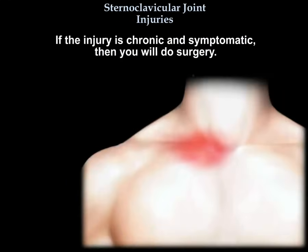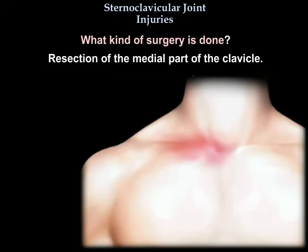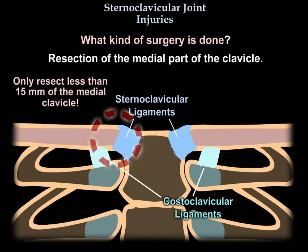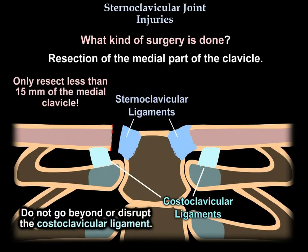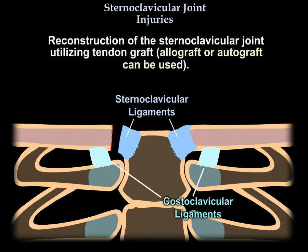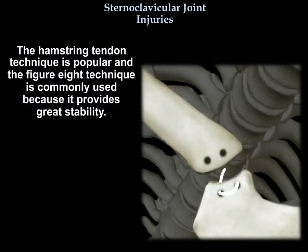If the injury is chronic and symptomatic, then you will do surgery — probably resection of the medial part of the clavicle. Only resect less than 15 mm of the medial clavicle; do not go beyond or disrupt the costoclavicular ligament. Perform soft tissue stabilization of the residual medial clavicle with costoclavicular ligament reconstruction. Reconstruction utilizing tendon graft — allograft or autograft — can be used. The hamstring tendon technique is popular, and the figure-eight technique is commonly used because it provides great stability.